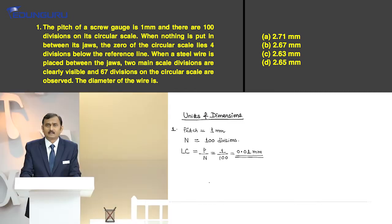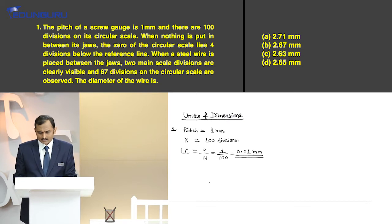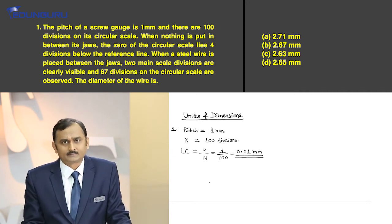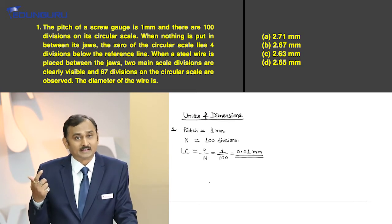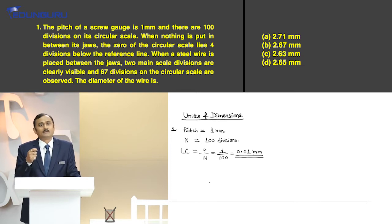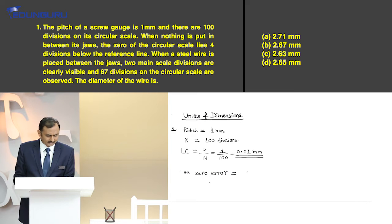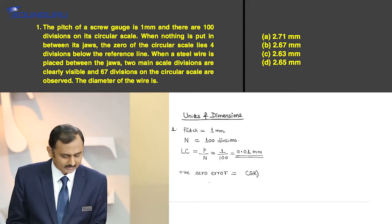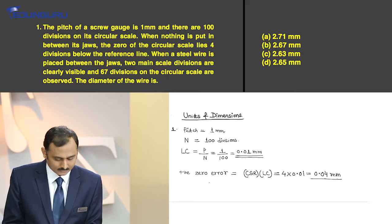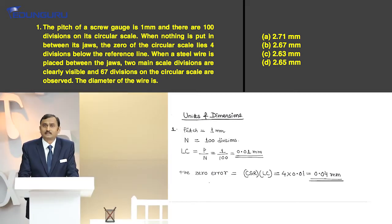We have calculated the least count of the screw gauge. Now, the zero of the circular scale lies 4 divisions below the reference line — which type of error is it? It's a positive zero error because the zero line is lying 4 divisions below the reference line. So there is some reading in this screw gauge even when we are not measuring anything. It's a positive zero error: circular scale reading multiplied by least count — that is plus 4 multiplied by 0.01 — equals 0.04 mm.